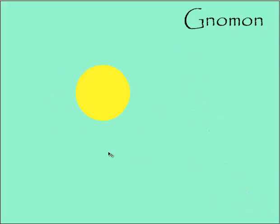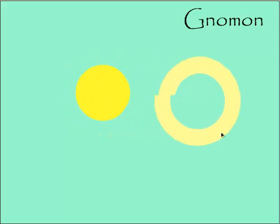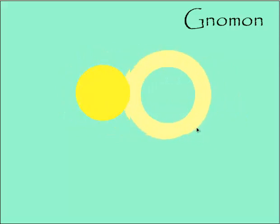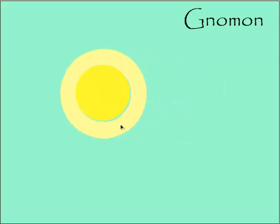Now to find a gnomon to a circle, I just need to add something that's going to make a bigger circle. Something that's gnomon is just a disk shape. If I put this disk around the outside, I get a larger circle. And circles are all similar.